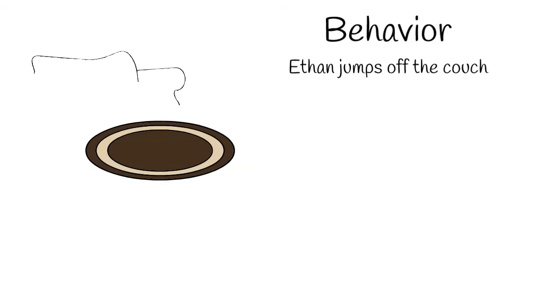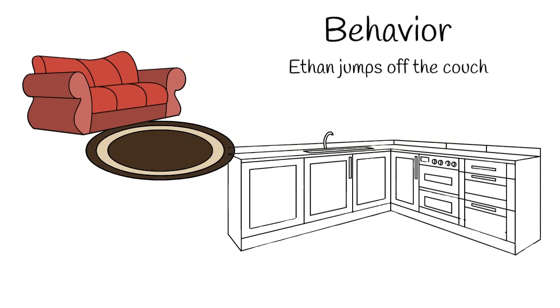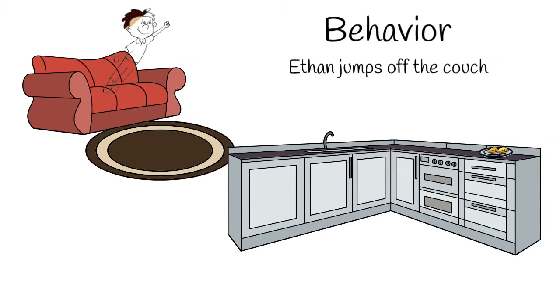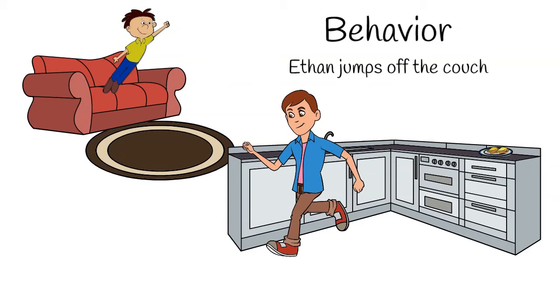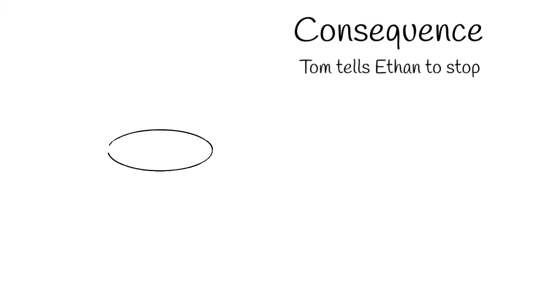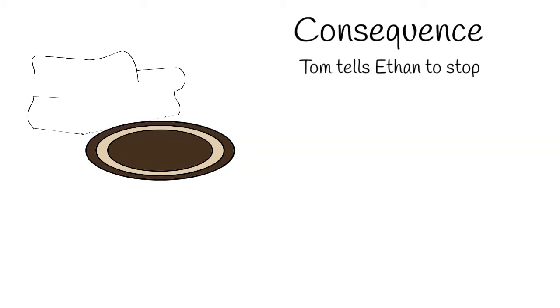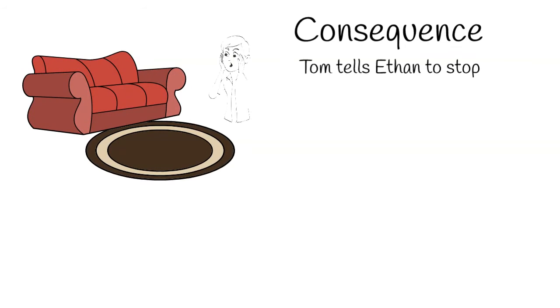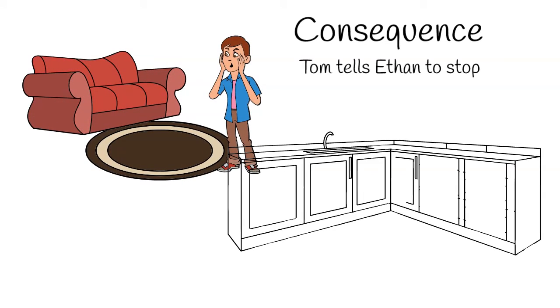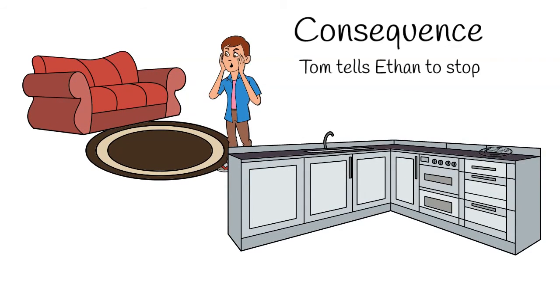Although Tom didn't see what started it, he could clearly see as Ethan launched himself from the couch. This was the behavior they were trying to learn more about. Tom responded the way he always did when Ethan engaged in frustrating behavior. Although he's not proud of it, he yelled at Ethan to stop. He really just needed to get food on the table so they could finish with the rest of their routine.